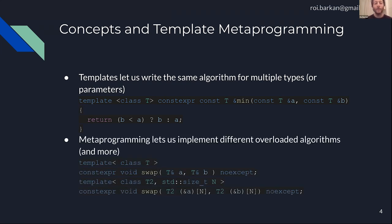Metaprogramming allows us to write algorithms over types and do many more things. Here's an example of a metaprogramming trick called specialization, where I write two different algorithms with the same name — swap — and choose to have the swap algorithm for general type T be implemented differently than a swap for an array of type T2 of size N.